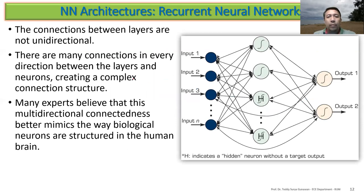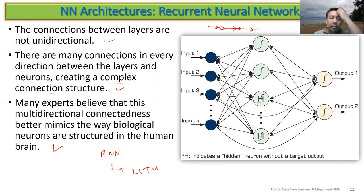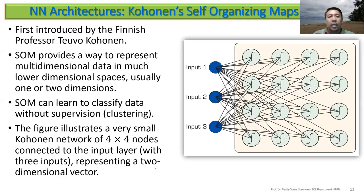In recurrent networks, the connections between layers are not unidirectional — arrows are bidirectional, so there are connections in every direction between layers and neurons. This creates a complex connection structure, and many experts believe it mimics the way biological neurons are structured in the human brain. From RNN, there is also the simplified version: LSTM. This is good for sequence data with time variation, such as speech recognition.